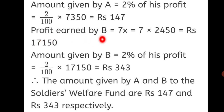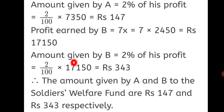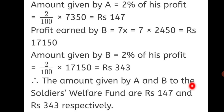Profit earned by B = 7x = 7 × 2,450 = Rs. 17,150. Amount given by B = 2% of his profit = 2/100 × 17,150 = Rs. 343. Therefore, the amount given by A and B to the soldiers welfare fund are Rs. 147 and Rs. 343 respectively.